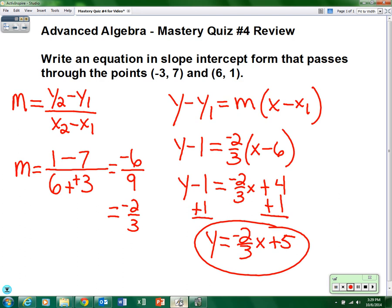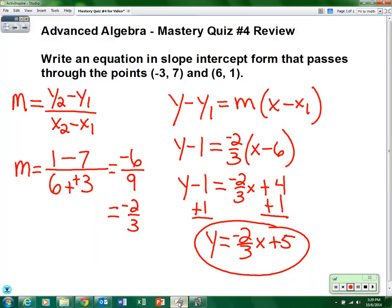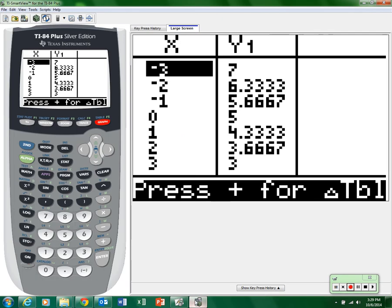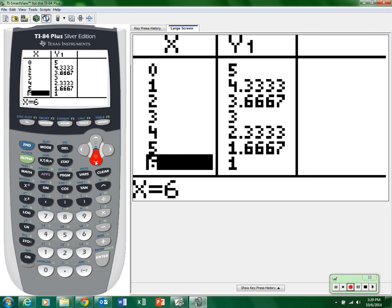We can then verify that these two points are in the table. So look for (-3, 7). Yep, there it is, right at the top. (-3, 7). And then the other ordered pair is (6, 1), so I'm going to have to scroll down a little bit. Positive (6, 1), there it is at the bottom. So I know I got the problem right. So use your technology, use your calculator to verify that equation goes through those two points.